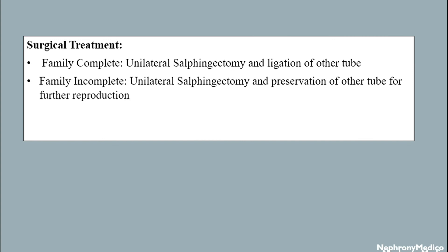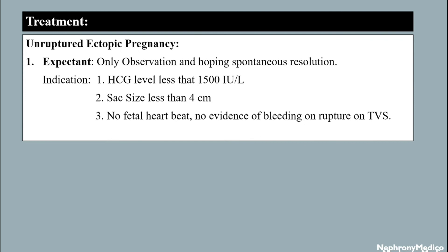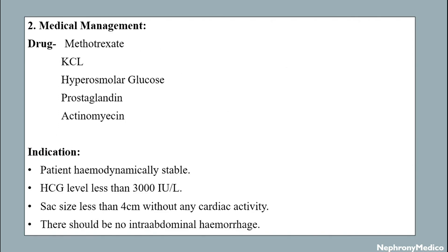Treatment in case of unruptured active ectopic pregnancy: expectant treatment with only observation is done if beta-hCG level is less than 1500 IU/L, sac size is less than 4 cm, and there is no fetal heartbeat or low evidence of bleeding or rupture. Medical management includes drugs like methotrexate, KCl, hyperosmolar glucose, prostaglandin, and actinomycin D. Indications include hemodynamically stable patient, hCG less than 3000 IU/L, sac size less than 4 cm without cardiac activity, and no intra-abdominal hemorrhage.